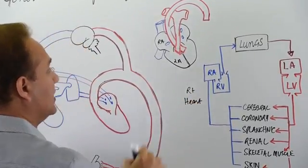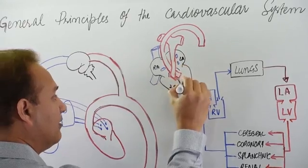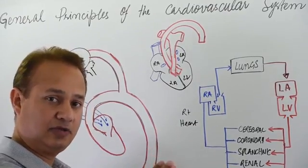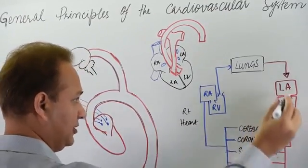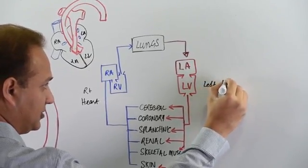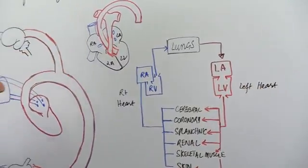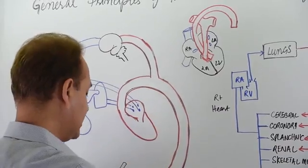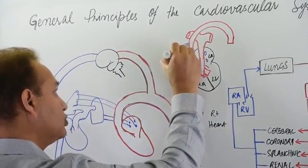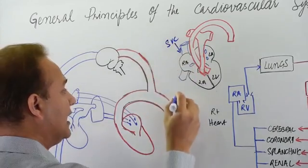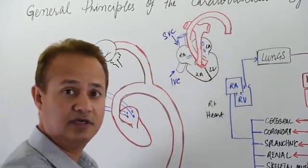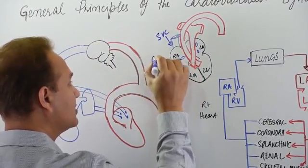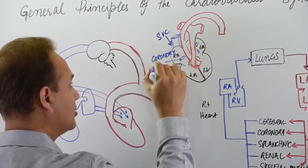The second functional unit is the left heart, consisting of the left atrium and left ventricle. The right atrium has three inputs: the superior vena cava, which brings blood from the head and neck area; the inferior vena cava (IVC), which brings blood from the rest of the body; and the coronary sinus, which brings blood back from the heart itself.